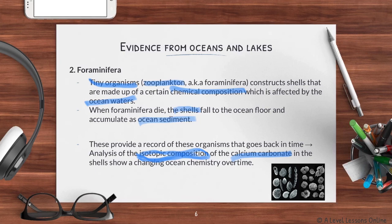These foraminifera provide a record going back in time. Analysis of the isotopic composition — specifically of calcium carbonate in the shells — shows how the chemistry of the ocean changed over time. When you pick up the sediment and test it, you compare the amount of isotopes during one glacial period versus another, and from the difference in isotopes you can determine the difference in temperature. You don't need to know the full science — just know that the difference in chemical composition helps show what the climate was during different periods.